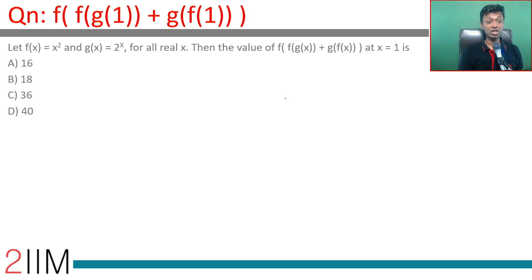f(x) equals x squared and g(x) equals 2^x. What is the value of f(f(g(x)) + g(f(x))) at x equals 1?